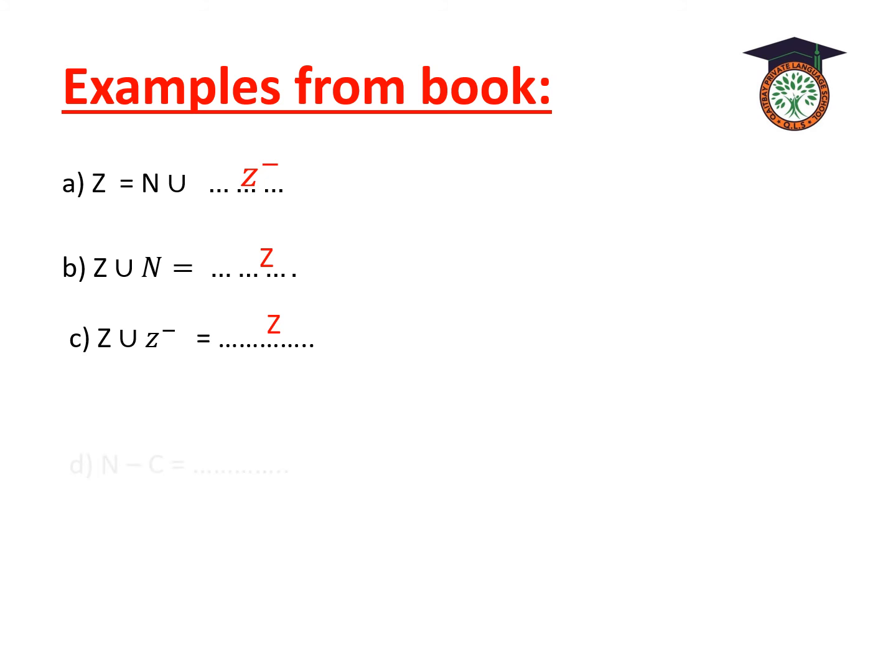Next example: N difference C. This asks what is found in the natural numbers but not found in the counting numbers. The answer is zero, since natural numbers include 0 but counting numbers start from 1.